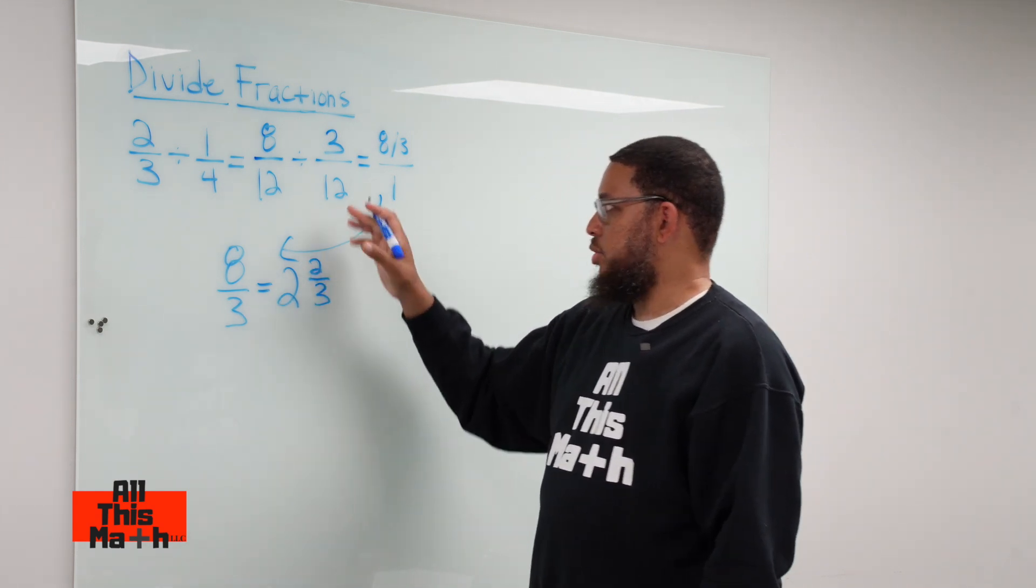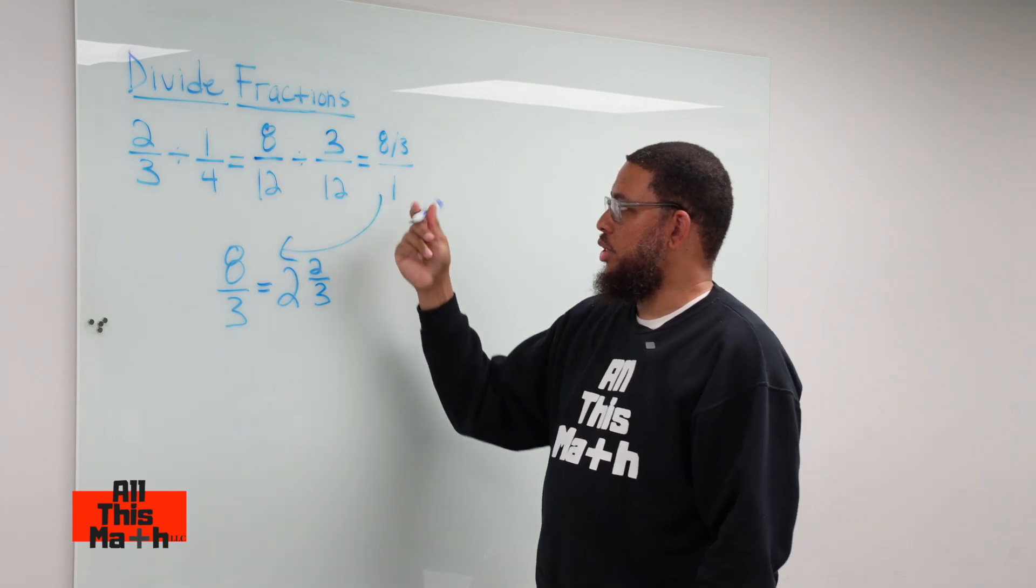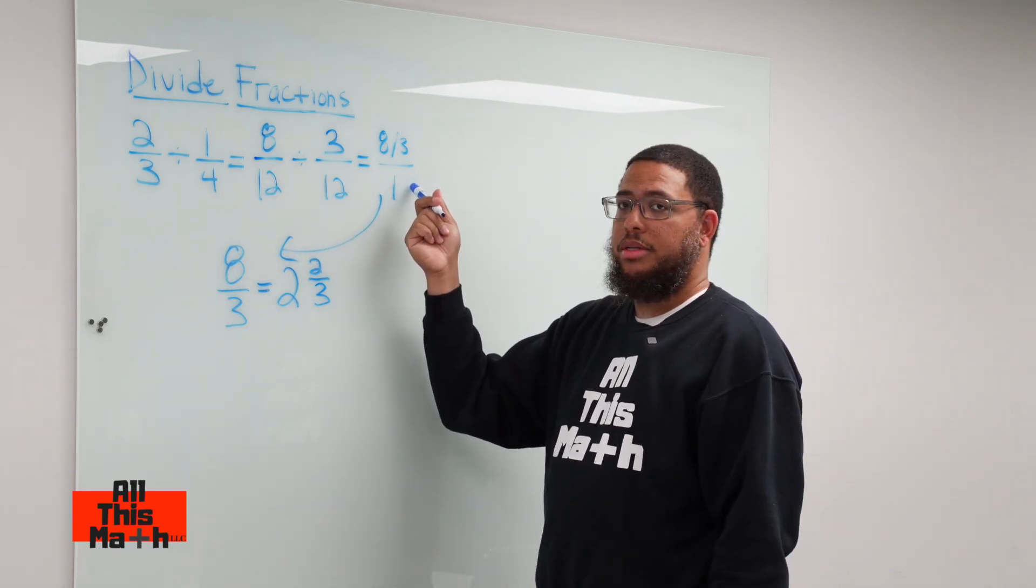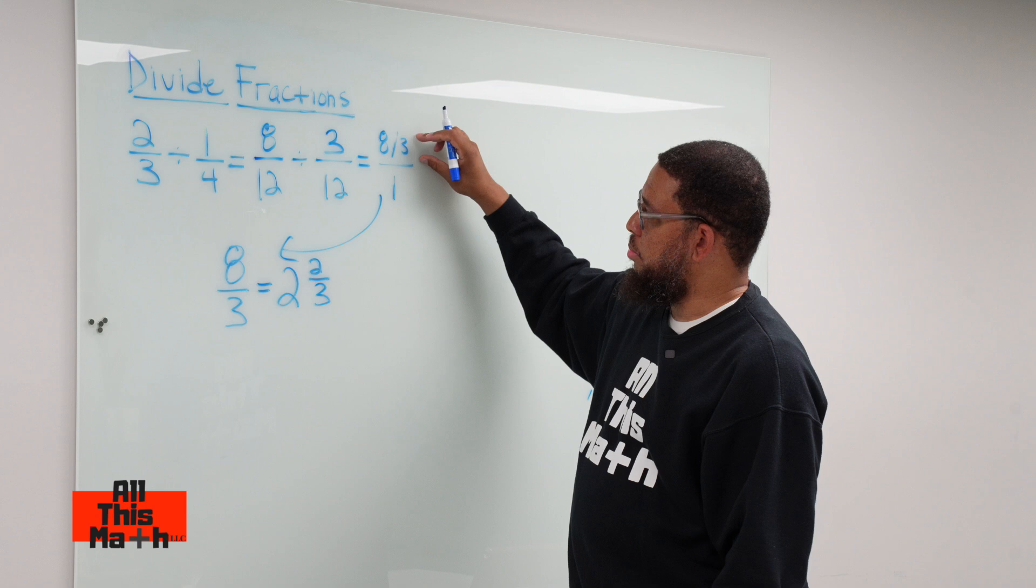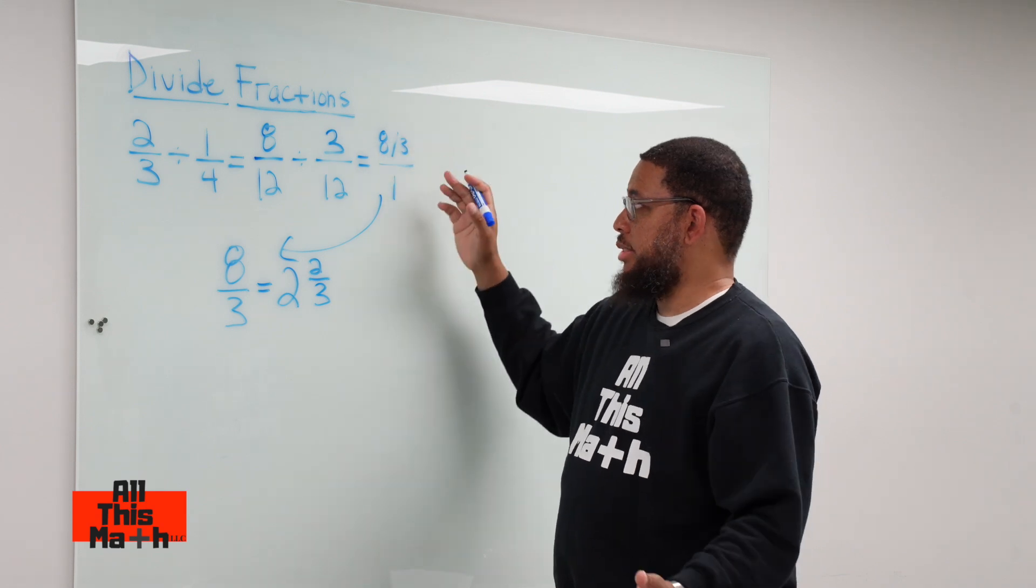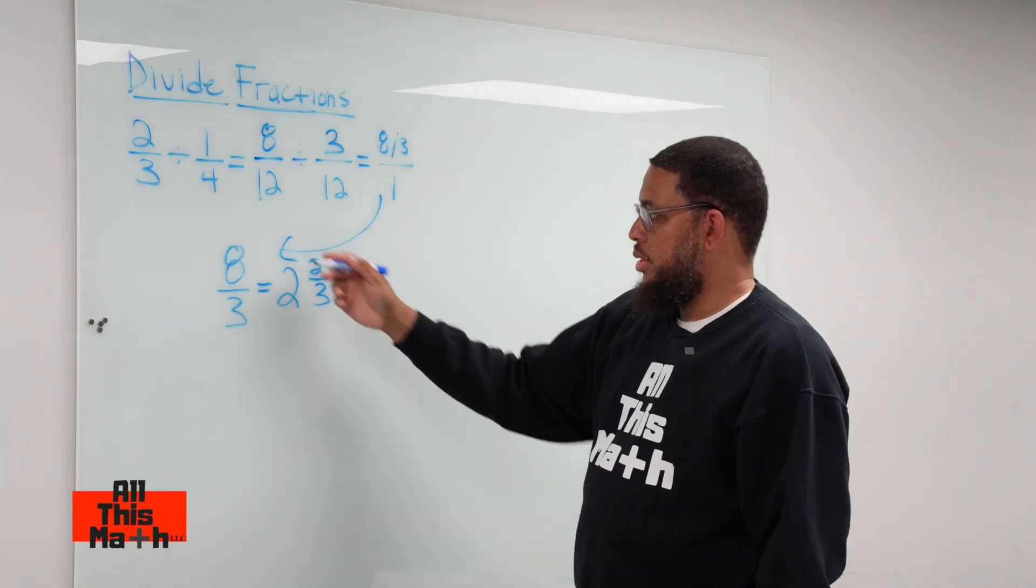Notice what happens. If you have common denominators, your denominator is always going to end up being 1. That's why your answer is whatever is left in the numerator. Sometimes you'll get a whole number too. And that's today's lesson.